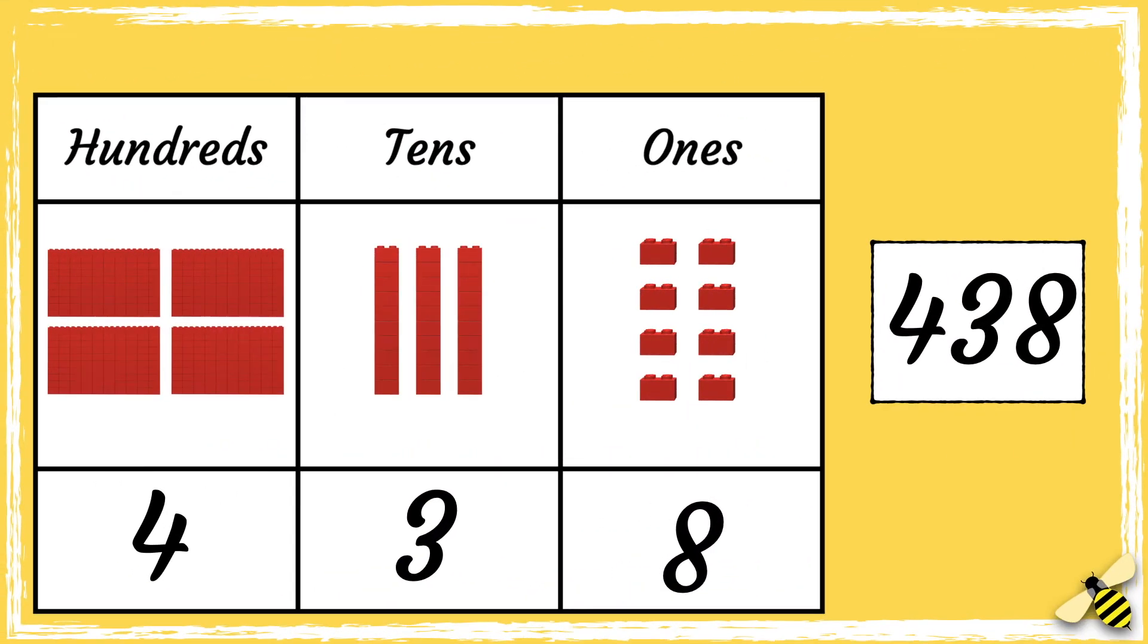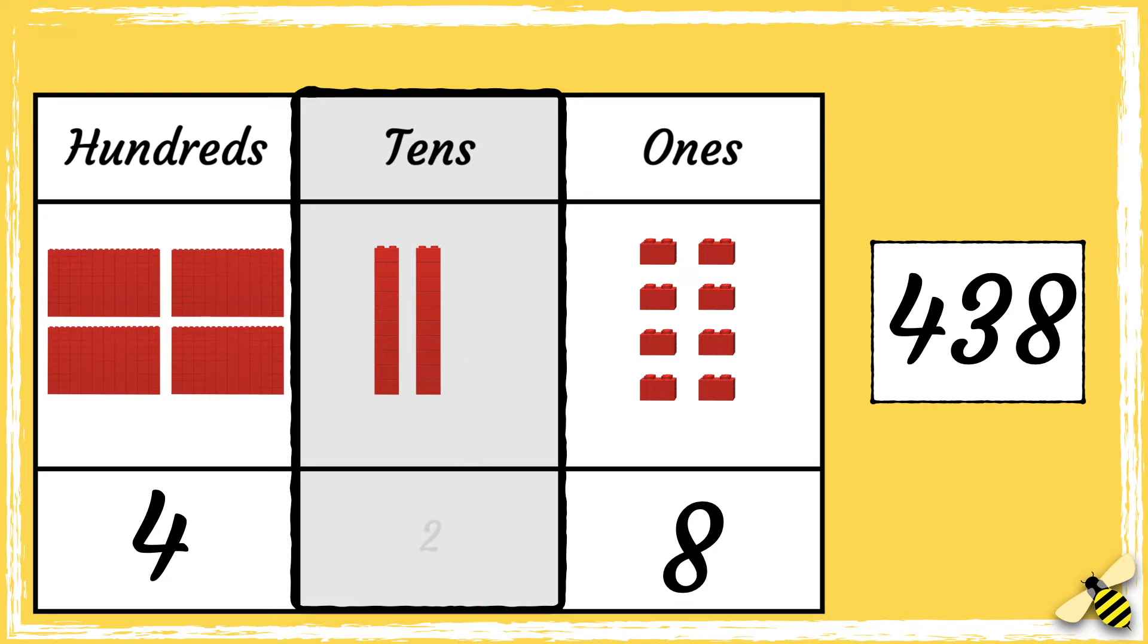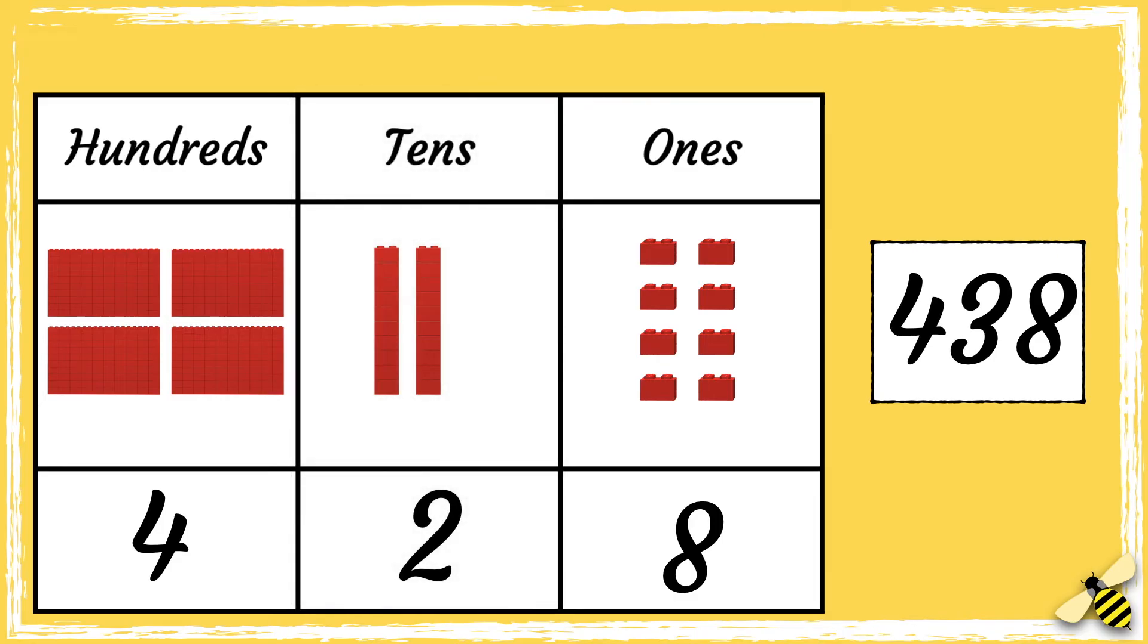Let's have a look at one more example. Here is the number 438. When we take away 10 from a number, we need to look at the tens column. So let's take away one 10. Three tens becomes two tens. So the new number is 428.